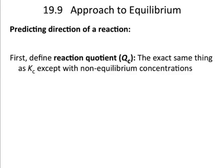So, how do we do this? We define the reaction quotient, we call it Q. You can have Q in terms of concentration or in terms of pressure, no problem, just like K. And so, this is the exact same thing as the equilibrium constant K, except you plug into it non-equilibrium concentrations.